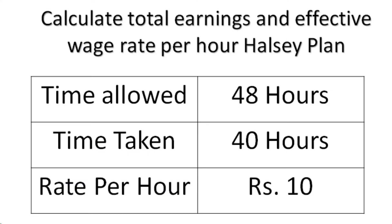Now see the question on the screen. We need to calculate the total earnings of the worker using the Halsey plan, as well as the effective wage rate per hour. The question gives: time allowed is 48 hours, time taken is 40 hours, and rate per hour is 10 rupees.